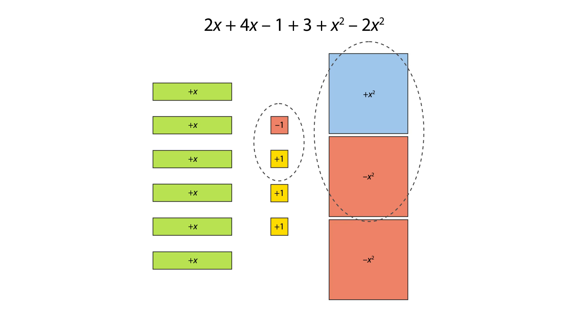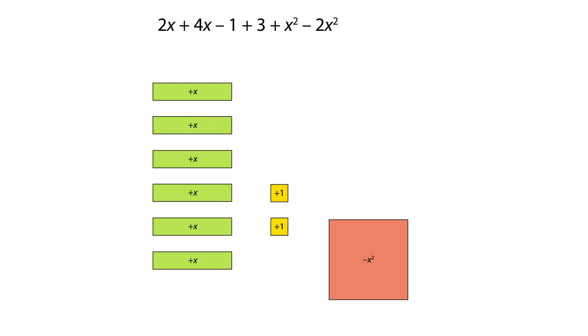There are two zero pairs in this expression. We can remove these tiles as they have a value of zero. This gives the simplified expression 6x + 2 - x².